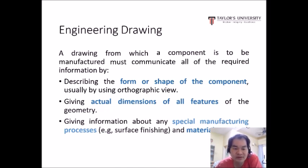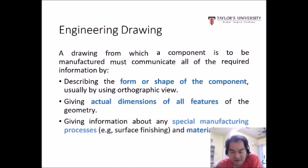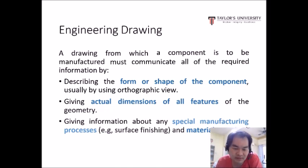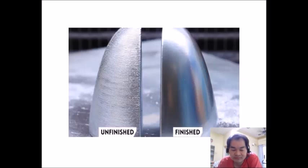An engineering drawing is the drawing from which a component to be manufactured must communicate all of the required information by describing the form or shape of the components, giving all the dimensions of all the features, and providing information about any special manufacturing processes such as surface finishings and material. The picture on the left hand side shows an unfinished part and the right hand side shows the finished part.